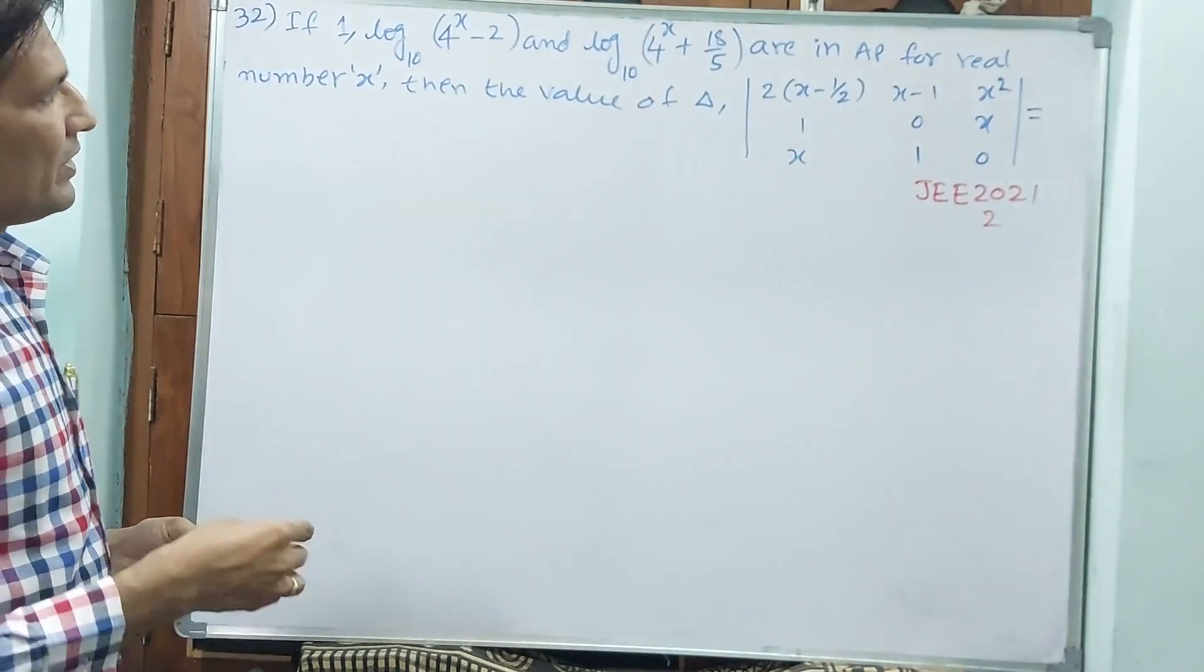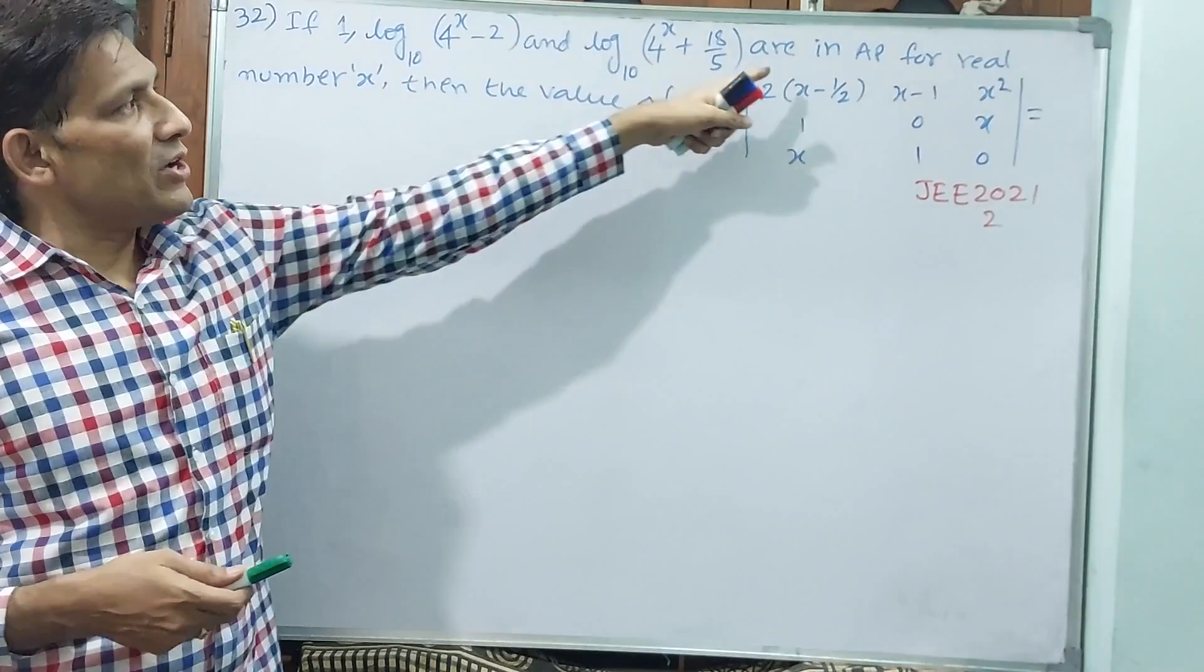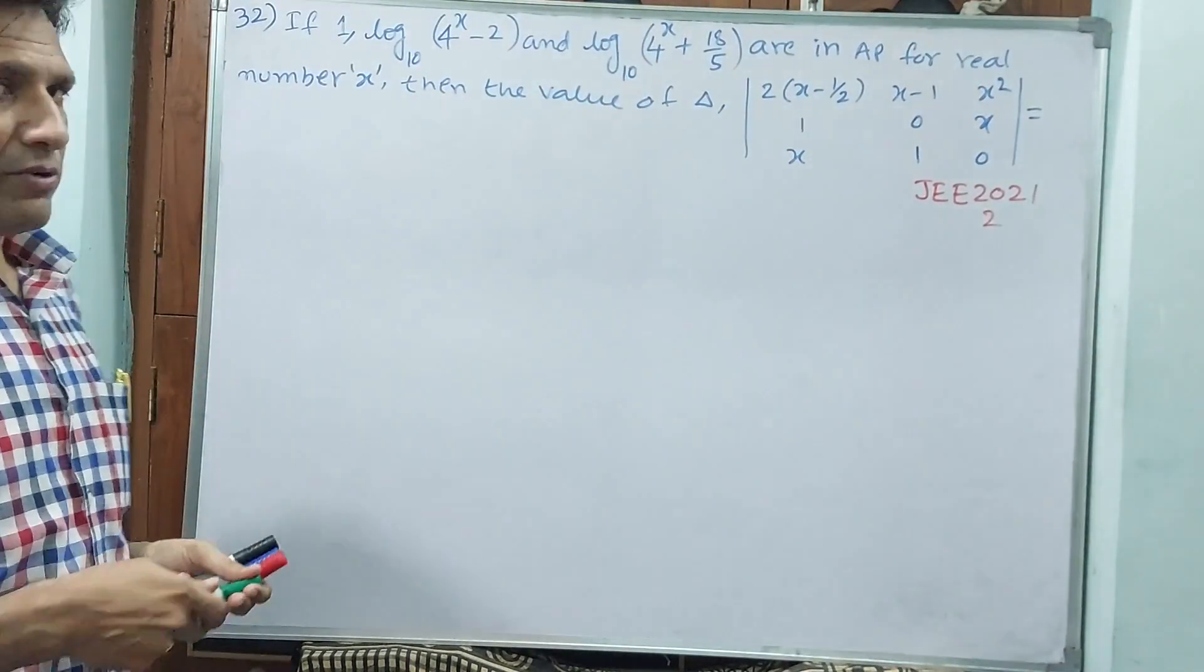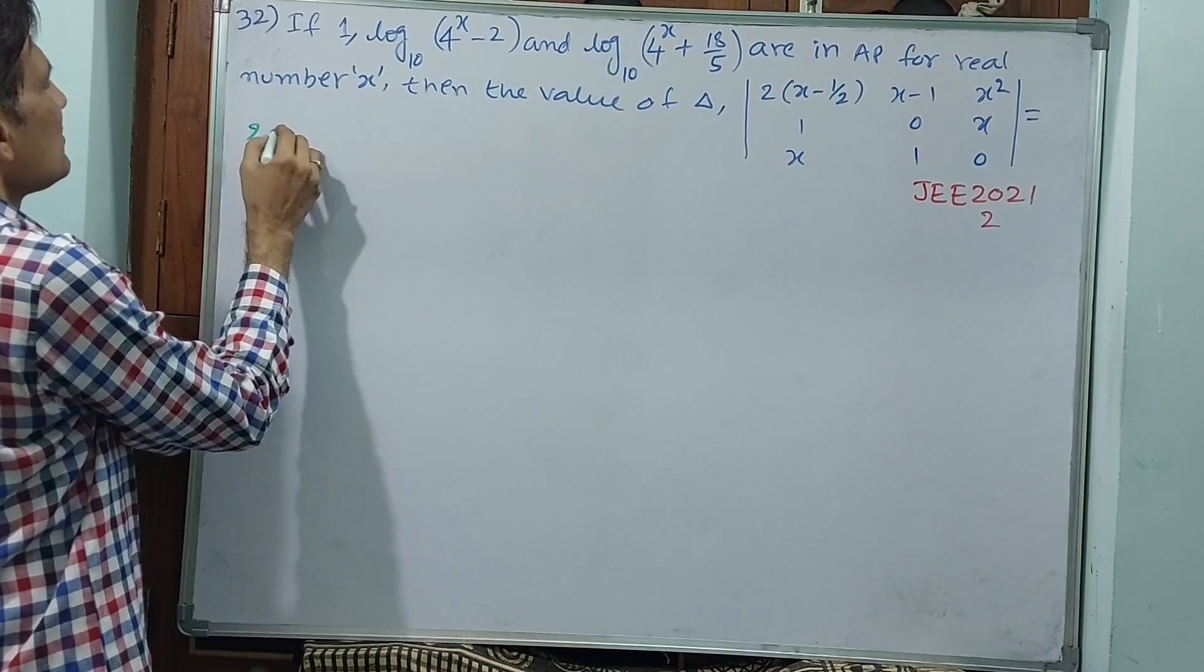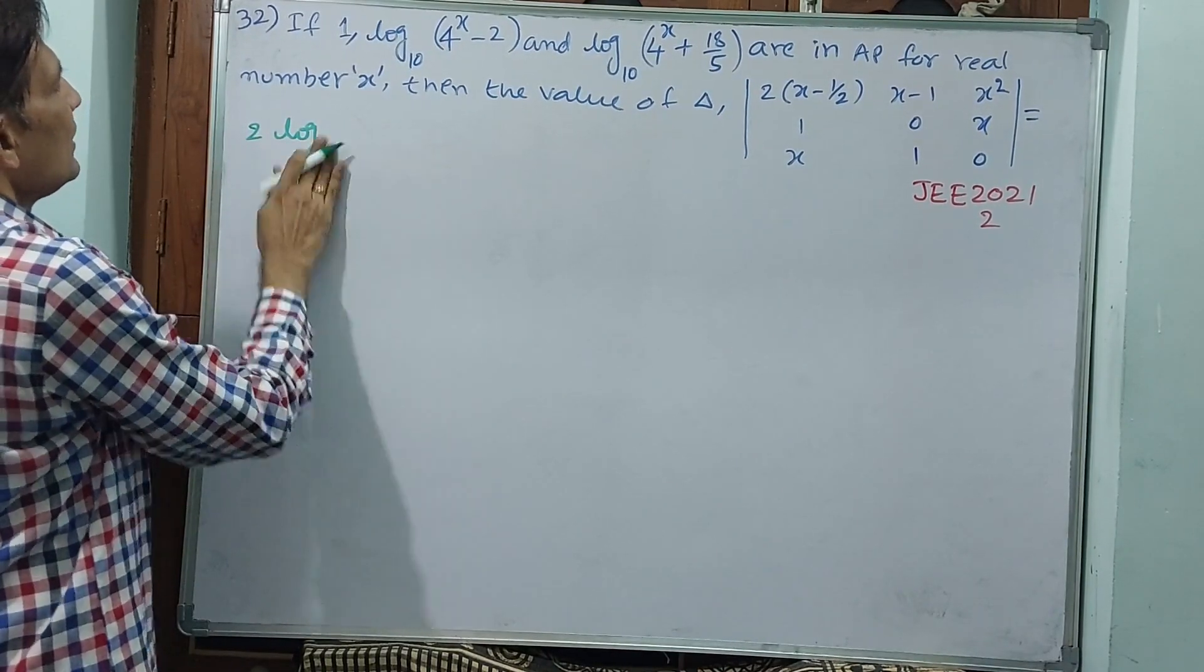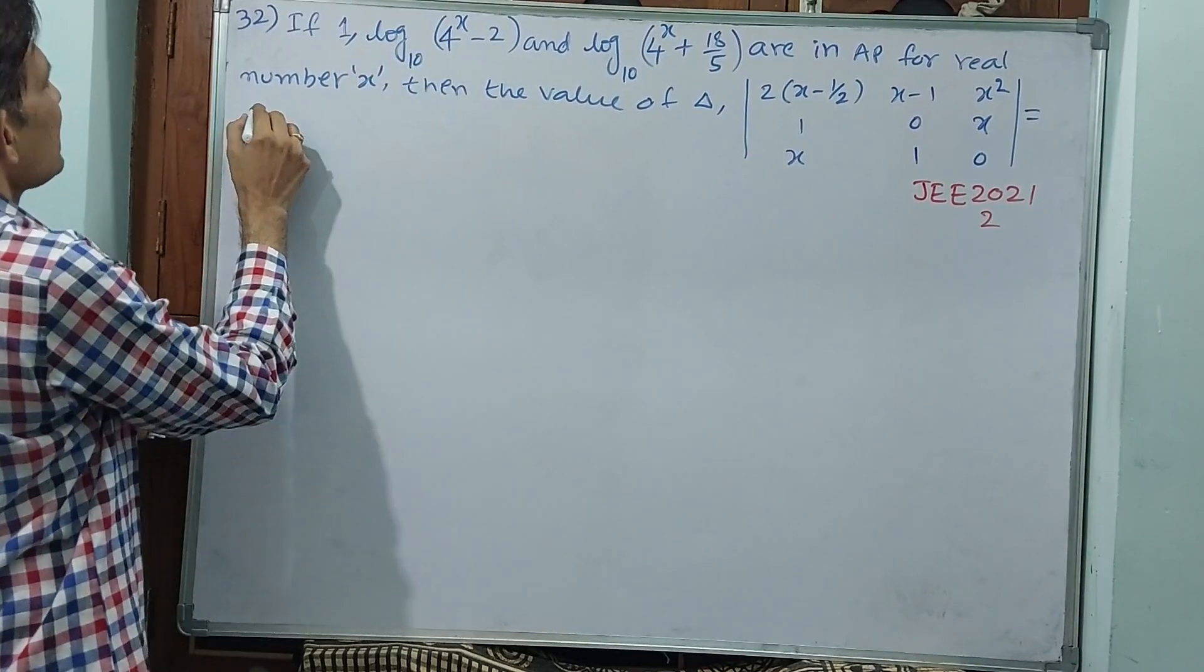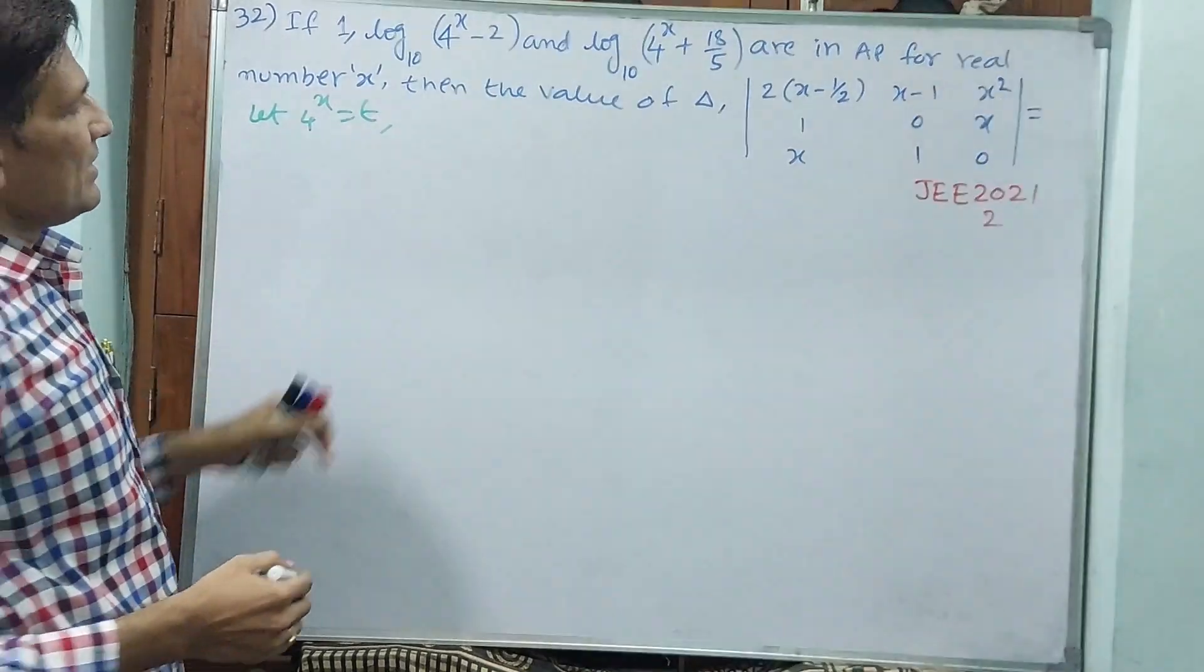See, such type of questions in logarithm. Naturally will be in AP, okay? If you see the middle term is this one. See, two times of log. So let me write: let 4^x = t. First I will write this one.